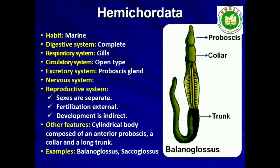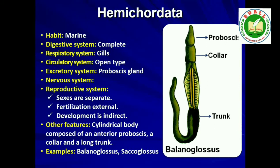Eleventh is Phylum Hemichordata. Hemichordata was earlier considered as a subphylum under Phylum Chordata, but now it is placed as a separate phylum under non-chordata. This phylum consists of a small group of worm-like marine animals with organ system level of organization. They are bilaterally symmetrical, triploblastic and coelomate animals. The body is cylindrical and is composed of an anterior proboscis, a collar and a long trunk. Circulatory system is of open type. Respiration takes place through gills. Excretory organ is proboscis gland. Sexes are separate. Fertilization is external. Development is indirect. Examples: Balanoglossus and Saccoglossus.